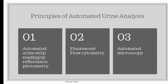Principles of automated urine analysis: principles on which automated urine analyzer works are automated urine strip reading by reflectance photometry, second is fluorescent flow cytometry, and third is automated microscopy.